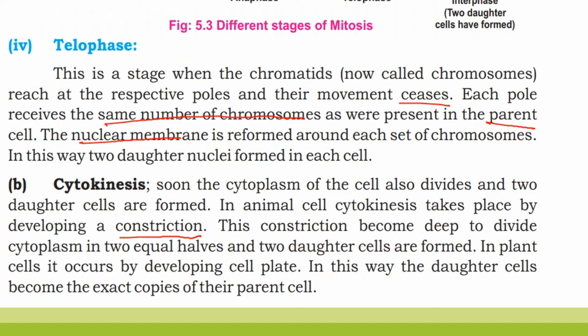In plant cells, cytokinesis occurs by developing a cell plate. In this way, the daughter cells become exact copies of the parent cell.